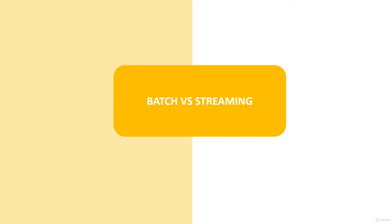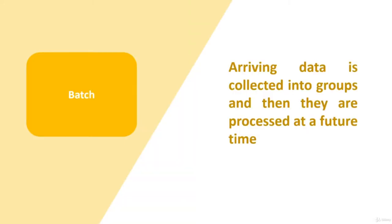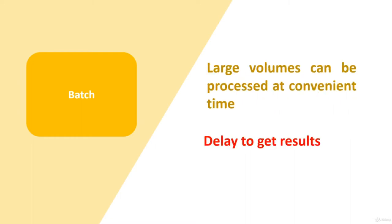There are two ways of processing data. In batch processing, arriving data elements are collected into groups and then processed on a schedule or triggered event. You can schedule processing once or twice a day, at a specific time at night to avoid peak hours, or wait until a desired number of elements is reached. The main advantage is processing large amounts of data when it best suits your business needs. The inconvenience is that you have to wait until the next processing cycle for results, and if there's an error in the batch, it won't get processed.